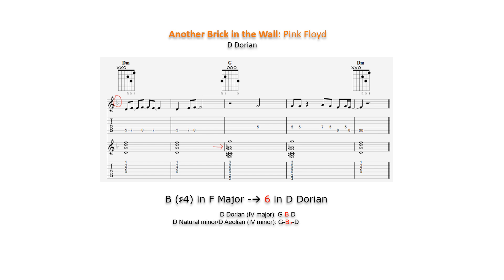Treating D as the 1 chord in D natural minor brings us to F major, with B flat as the key signature. Raising B flat to B natural makes B the 6th in D Dorian and the sharp 4 in F major. This changes G minor — the 4 chord in D natural minor — to G major in D Dorian.